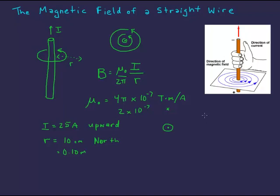The magnitude of this is going to be mu naught over 2π. And then we're going to have our current over our distance. And I'm going to do that down here where I actually have some room. And that's going to be 2 times 10 to the negative 7 times 25 amperes over 0.10 meters, which is a value of 5 times 10 to the negative 5 tesla.